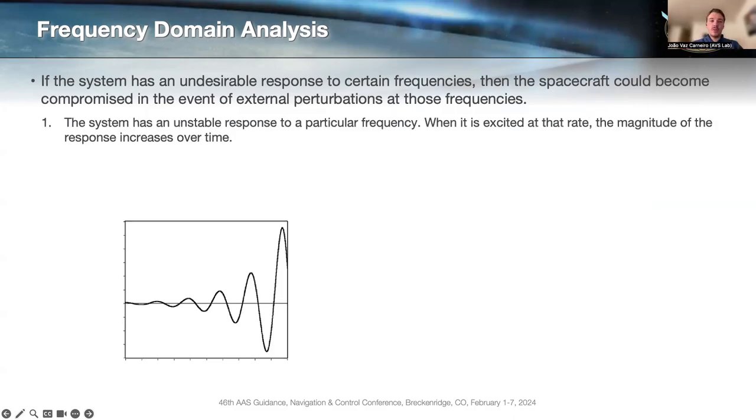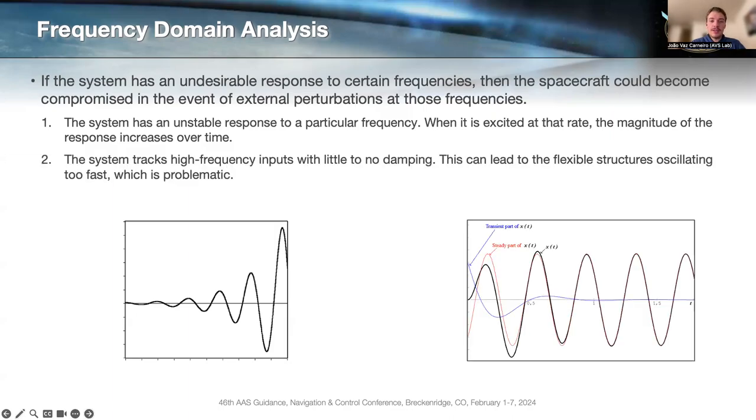There's basically two undesirable behaviors of the system. The first one is perhaps the most obvious, where the system actually becomes unstable at certain frequencies. If you apply that frequency as an input, the system just blows up; the response blows up. The second possible response is the system actually tracks certain frequencies too well. If the frequencies are small, this usually isn't a problem. But when frequencies are really high and the system still tracks those pretty well, that can be a problem because the panels might be wiggling at a really high frequency, and that's definitely not desirable.